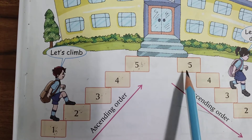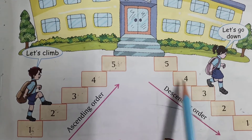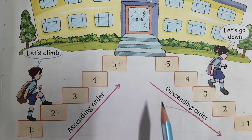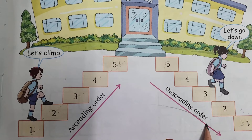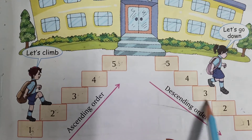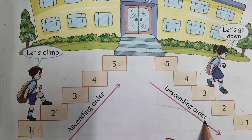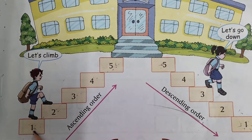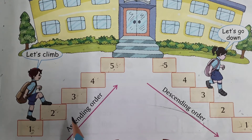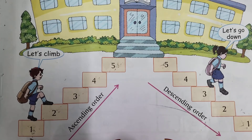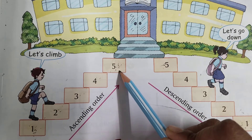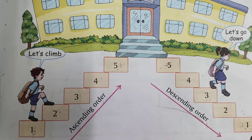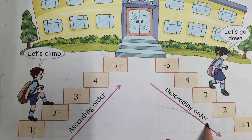When we go down from the top, as we go down, we go to the smaller number — that is descending order. When we go up to a smaller number and increase, we say ascending order. When we go down to a lower number, that is descending order.